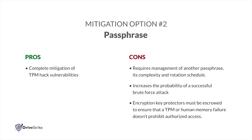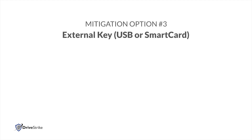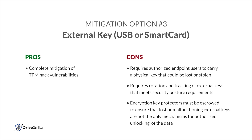Additionally, encryption key protectors must be escrowed somewhere to ensure that a human memory failure doesn't prohibit authorized access. External key, USB, or smart card: this completely mitigates TPM hack vulnerabilities, with the downside requiring authorized endpoint users to carry a physical key that could be stolen along with the endpoint. You will also want to rotate and track these external keys at some interval that meets your security posture requirements. Encryption key protectors must be escrowed somewhere to ensure that lost or malfunctioning external keys are not your only mechanisms for authorized unlocking of the data.